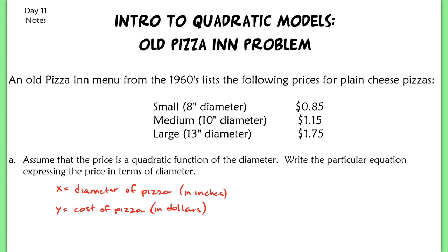In this first part, it says assume that the price is a quadratic function of the diameter. Write the particular equation expressing the price in terms of diameter. So y in terms of x is how you can read price in terms of diameter. Here I've got it already defined where you have x as your diameter in inches, and y as the cost of the pizza.